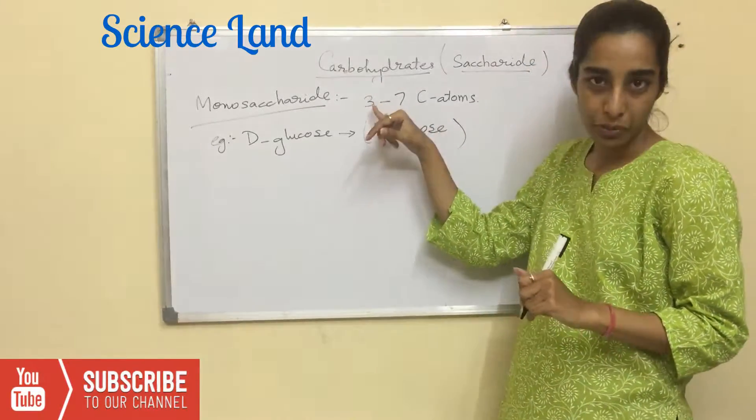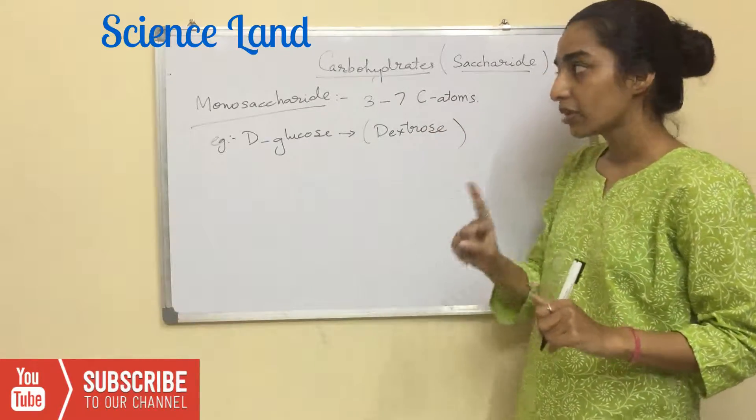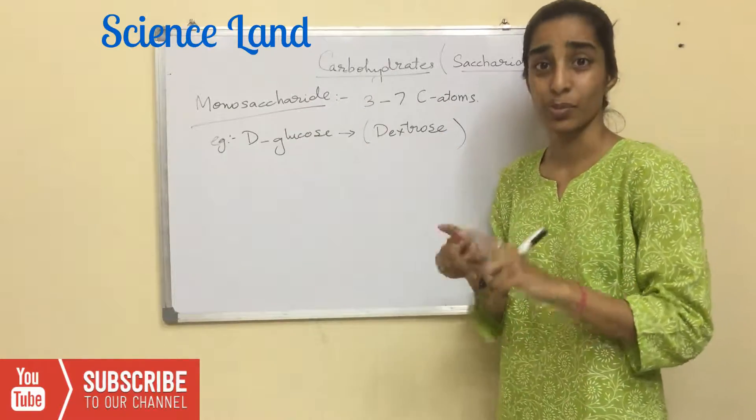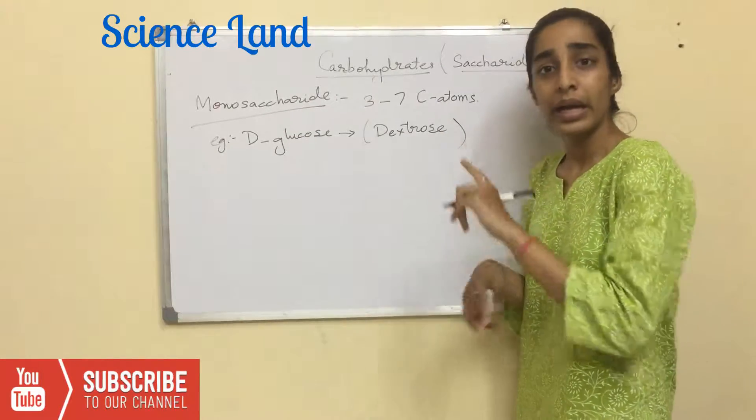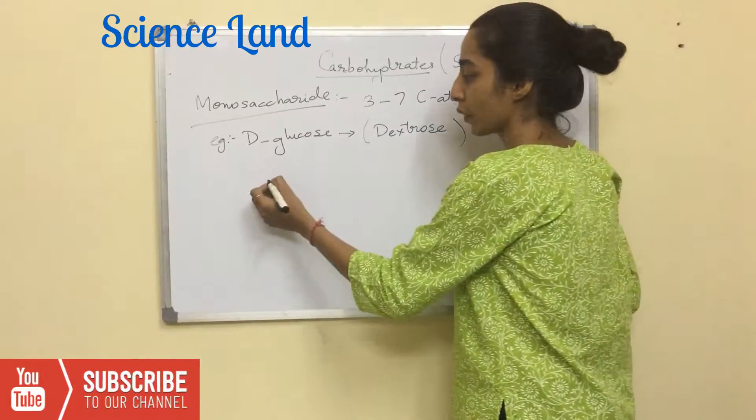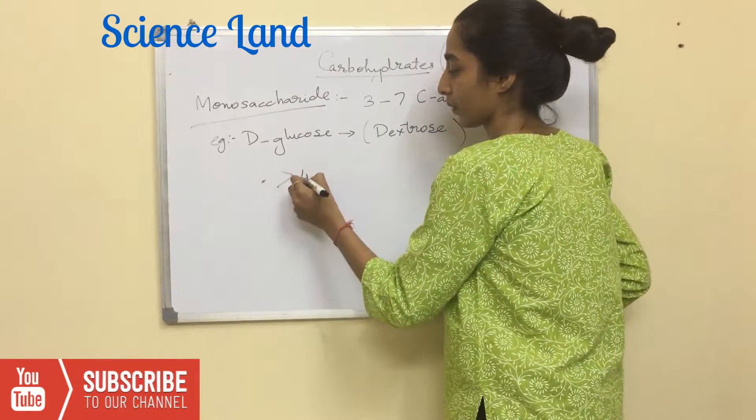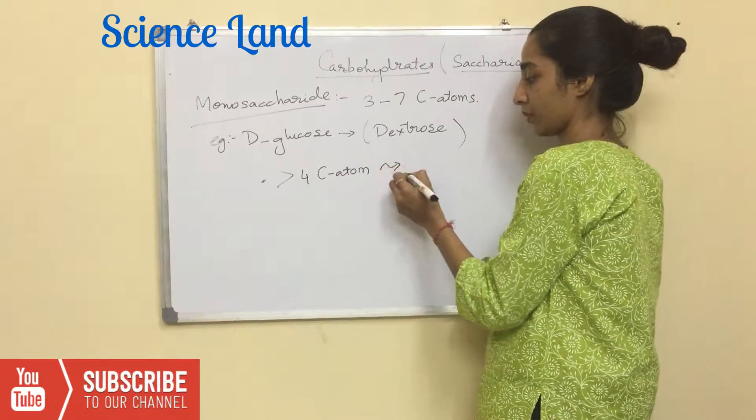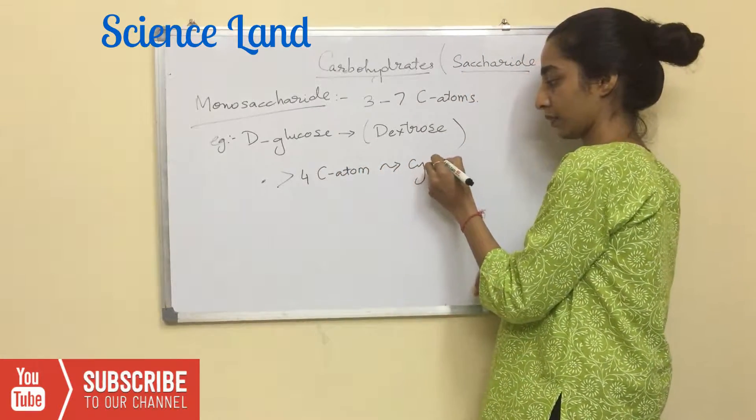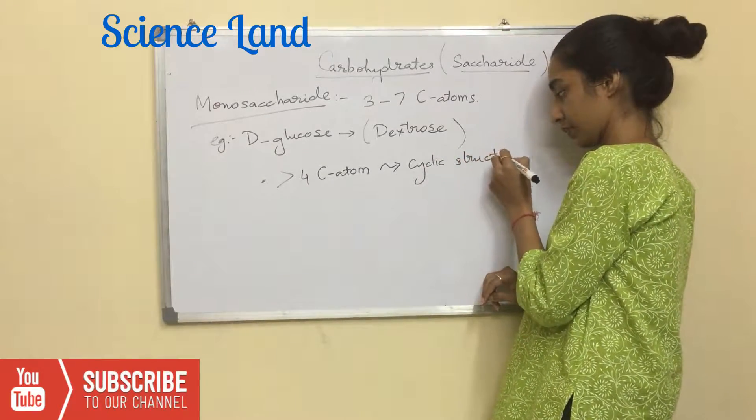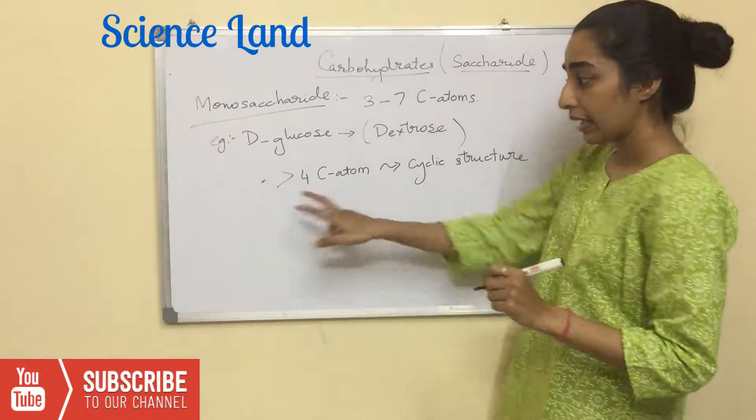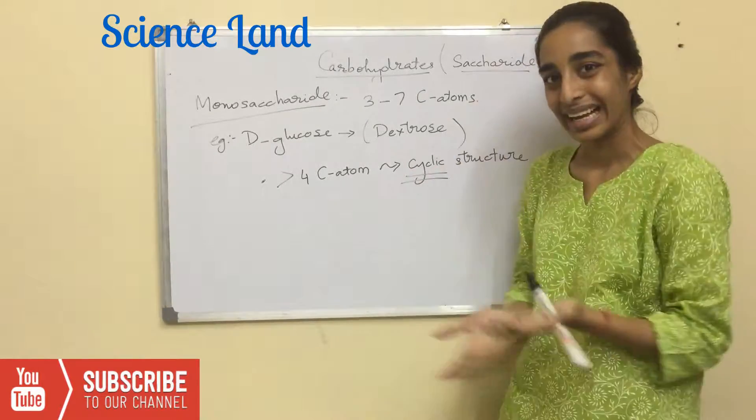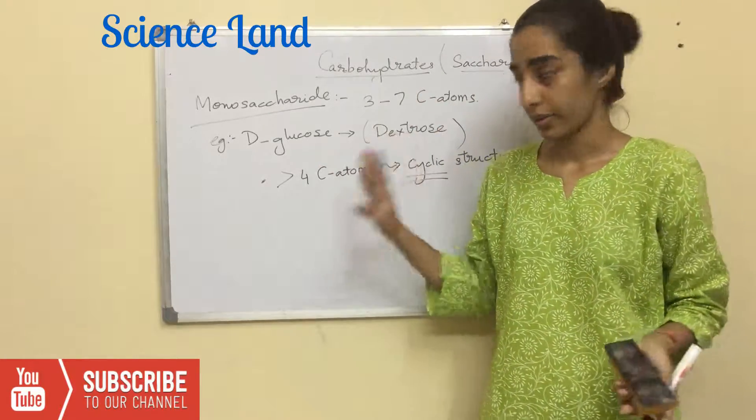Now I've said that minimum three, maximum seven carbons. You need to remember one detail: if this monosaccharide has more than four carbons, it will form a cyclic structure. So that is what a monosaccharide basically means.